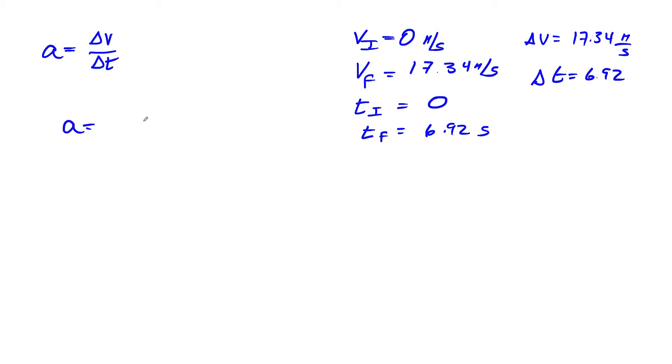Our velocity is 17.34 meters per second. I'm not going to put the units down yet. The time is 6.92, and then just do the math. So if I look at this, look at my calculator here, 17.34 divided by 6.92.